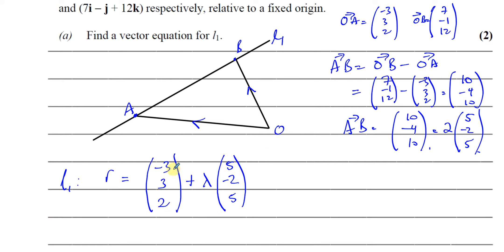I could have written the position vector of B — 7, minus 1, 12 — instead, or used lambda times 10, minus 4, 10, or even the reverse direction minus 5, 2, minus 5. As long as you have a point on the line and a scalar times any direction parallel to the line, you'll have the equation of the line. That's part A done.